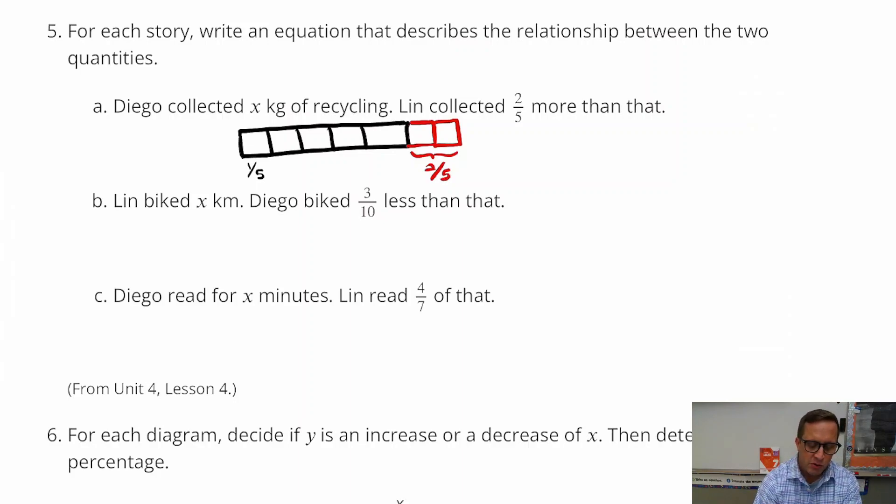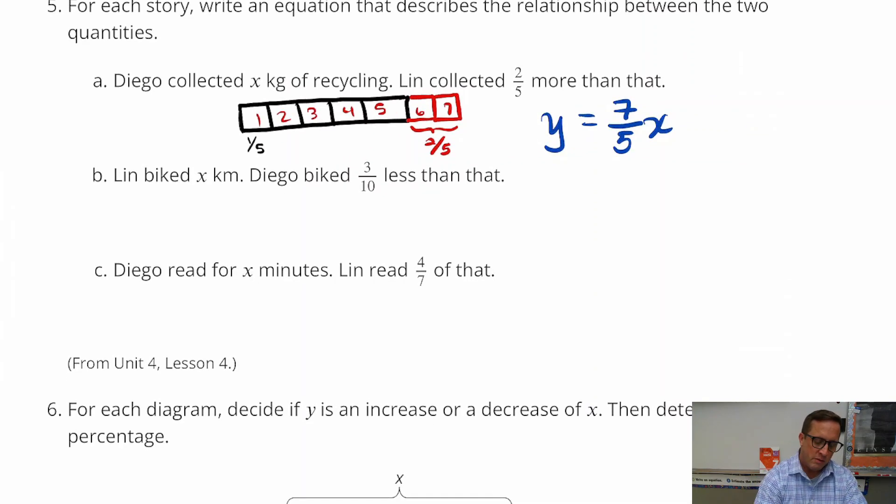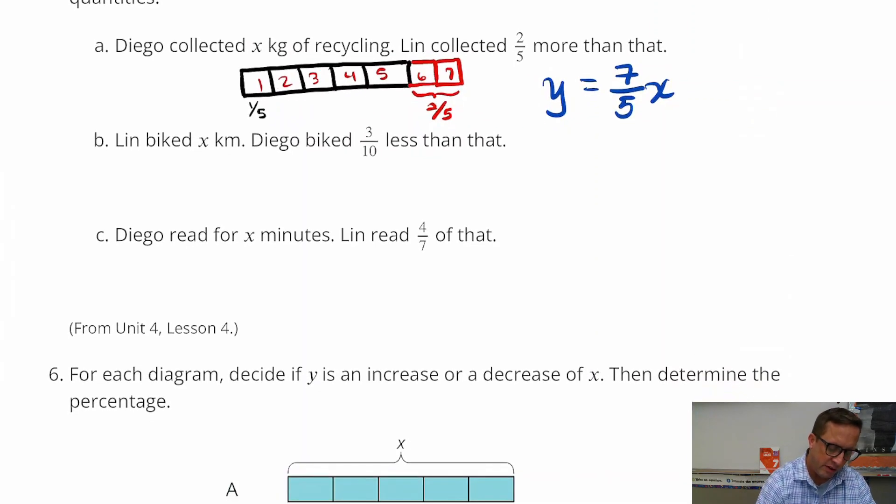And so what we have now is a total of seven-fifths. We have seven of them. So that is going to be our equation. We're going to put y equals seven-fifths x.